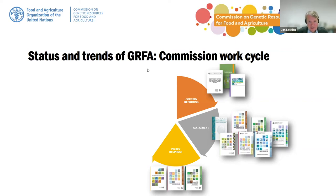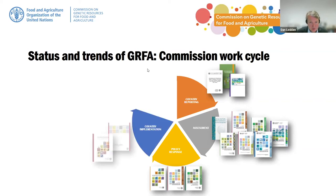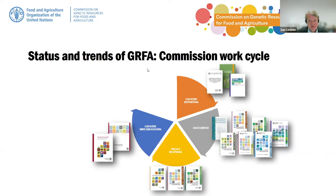Once the policy responses have been agreed and adopted by the Conference or Council of FAO, the most important part of the commission's work cycle is implementation. Let's be frank — it's also the most difficult part and probably where the biggest problems lie, because many countries lack the capacity and resources to implement the global plans of action. FAO supports countries to the extent possible in implementing the global action plans.